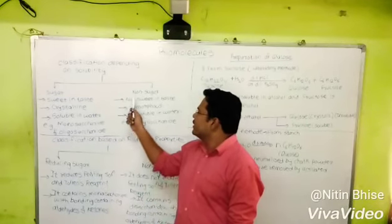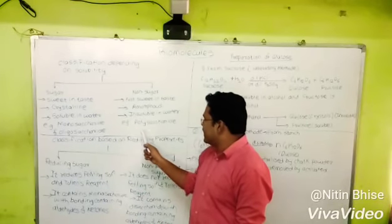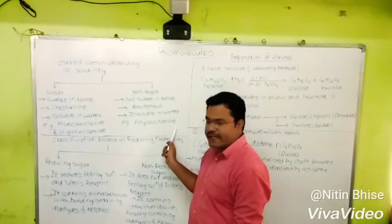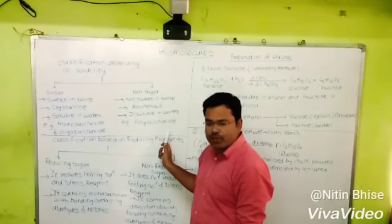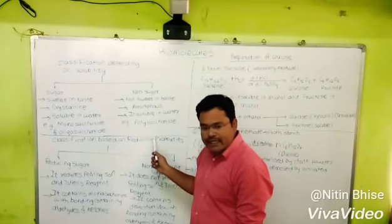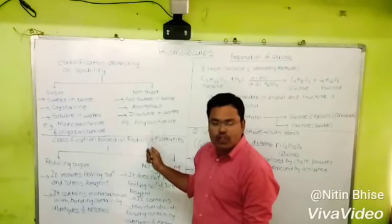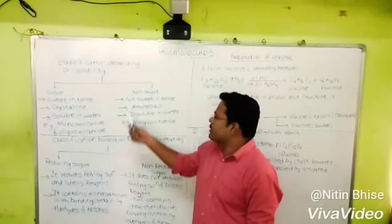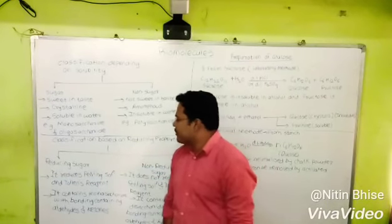Non-sugars are polysaccharides. For example, starch is a polysaccharide and cellulose is a polysaccharide. So they are non-soluble — they are non-sugars.